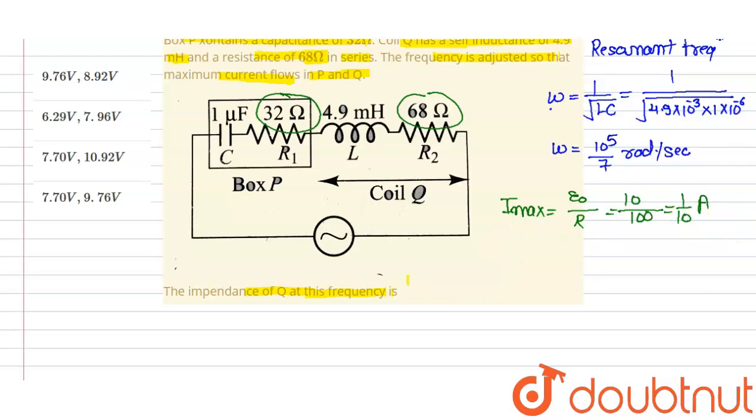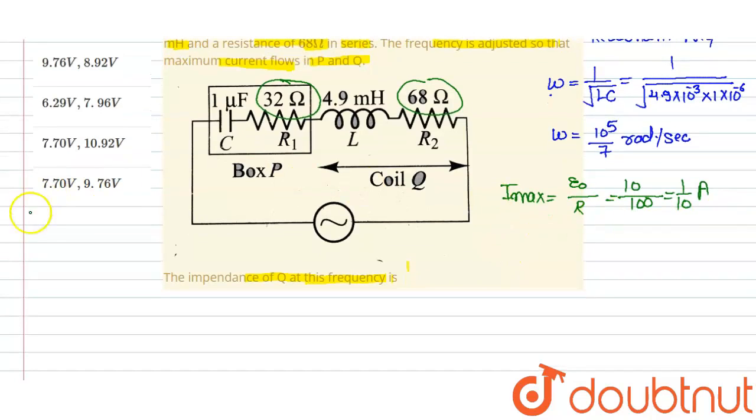Now one by one we calculate the impedance for P and Q. Impedance ZP is equivalent to whole root of R1 square plus 1 upon omega C, whole square, power 1 by 2. R1 is given as 32 whole square plus 1 upon omega which we calculated as 10 to the power 5.